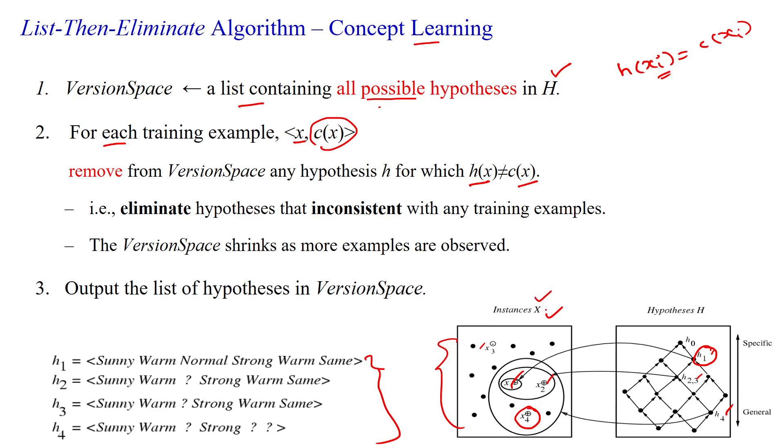Then only we can say whether the selected hypothesis is consistent or not. If it is not satisfying the given constraint, H of XI not equal to C of XI, then it is inconsistent.